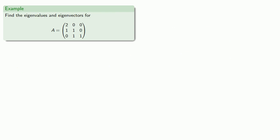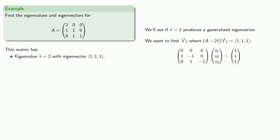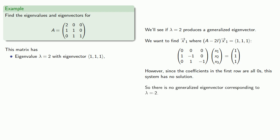Let's take another look at finding generalized eigenvalues and eigenvectors with a new matrix. We find that eigenvalue lambda equals 2 has a corresponding eigenvector. We see if lambda equals 2 produces a generalized eigenvector by finding a vector that maps onto the eigenvector (1, 1, 1). However, since the coefficients in the first row are all zeros, the system has no solution, and so there is no generalized eigenvector corresponding to lambda equals 2.